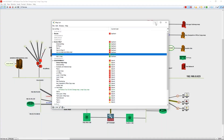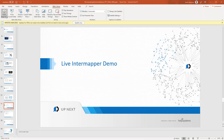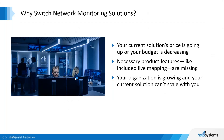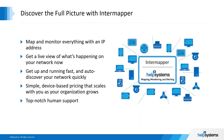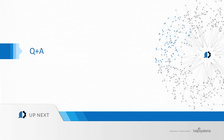That's a basic demo of the software. Intermapper can be installed on Windows, Linux, and macOS, so it's very flexible in terms of what it can be installed on. We've talked about the things to take into consideration when looking at network monitoring solutions, things to consider when comparing existing versus new solutions, and what's most important when making that final decision. If you have any questions, please send them in the Q&A section.